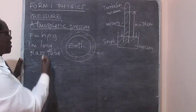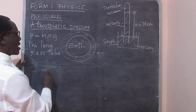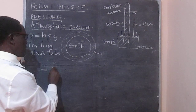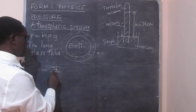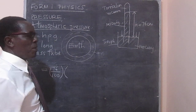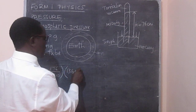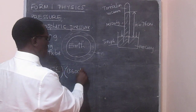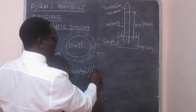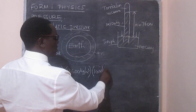From this, we can work out the value for atmospheric pressure using the formula P = hρg, whereby we use 76 centimeters as the height. The density of mercury is known — it is 13,600 kilograms per meter cubed — and the pull of gravity is 10 newtons per kilogram.